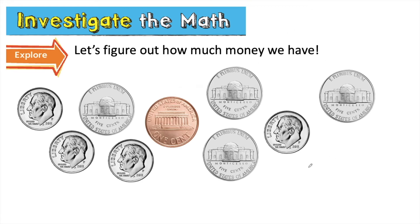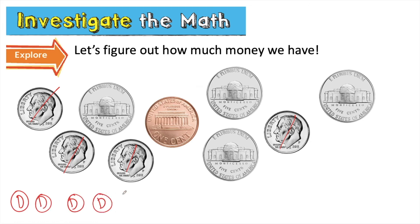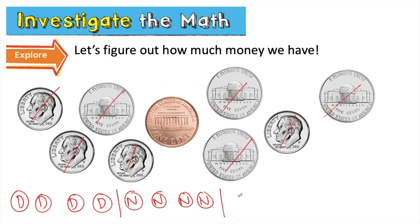What are some ways we could figure out how much money we have? We can skip count, and we should start with the coin with the greatest value first. Let's find all of our dimes — one, two, three, four. Let's rewrite them to help keep track of what we're skip counting by. After dimes, what do we count? Our nickels. Let's rewrite them. And finally, we see one penny.